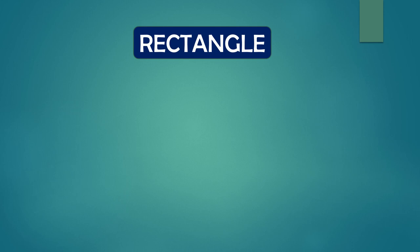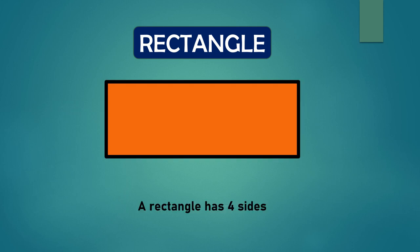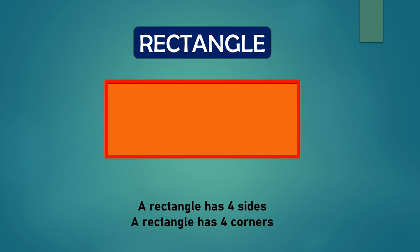For rectangle. A rectangle has four sides: one, two, three, four. It also has four corners: one, two, three, four.